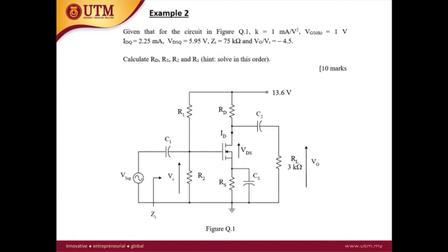Next is Example 2, which is a common source circuit. The question is similar to Example 1 — it's a reverse engineering question. The straightforward question would have all resistor values given and you calculate the AC parameters. In this reverse engineering question, the AC parameters are given and you need to determine the value of the resistors.